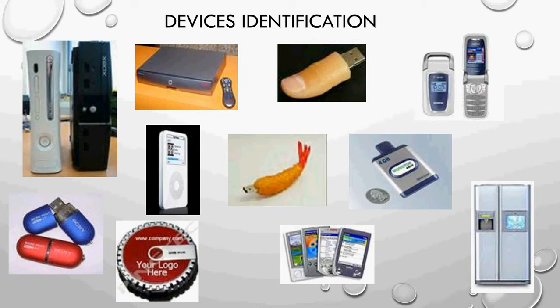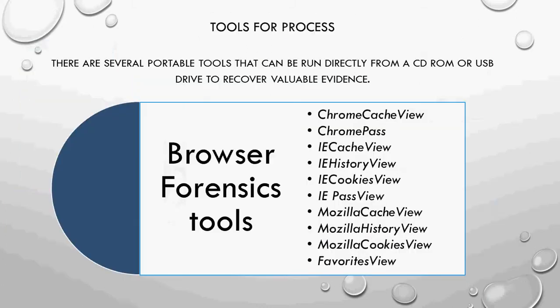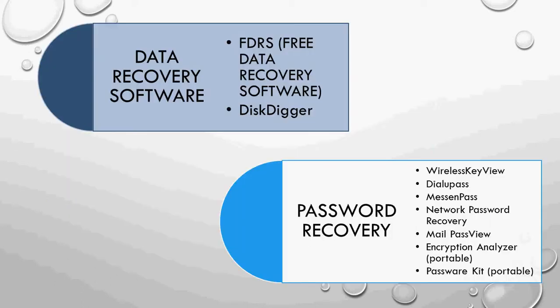As new forms of devices are manufactured day to day, we need to be aware of various new designs of storage devices so that during investigation we can collect all possible storage devices. Here are some pictures of storage devices which help us identify them at the crime site. There are also basic browser forensic tools for browsers like Chrome, Internet Explorer, or Mozilla. Data recovery software includes Disk Digger, FDRS, and Data Recovery. Password recovery software includes Network Password Recovery, Email, BusView, and Encryption Analyzer.